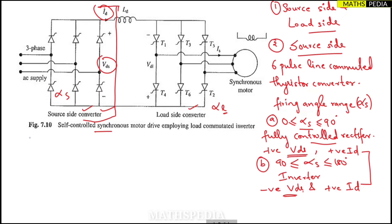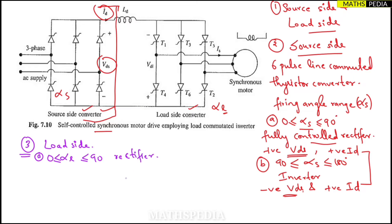Now let us talk about the load side converter. For the load side, whenever alpha-l, the firing angle, ranges between 0 to 90 degrees, the same thing happens — it will work as a rectifier and will give positive Vdl, where Vdl is the voltage across the load side converter.